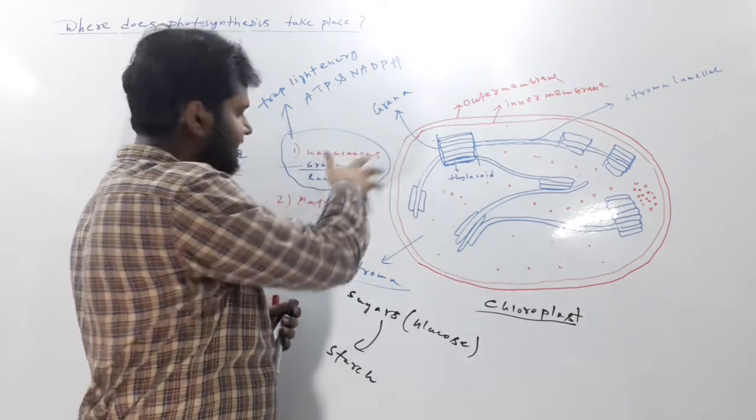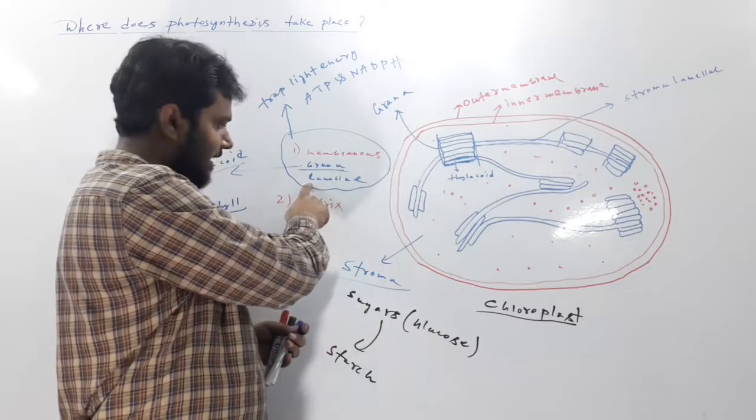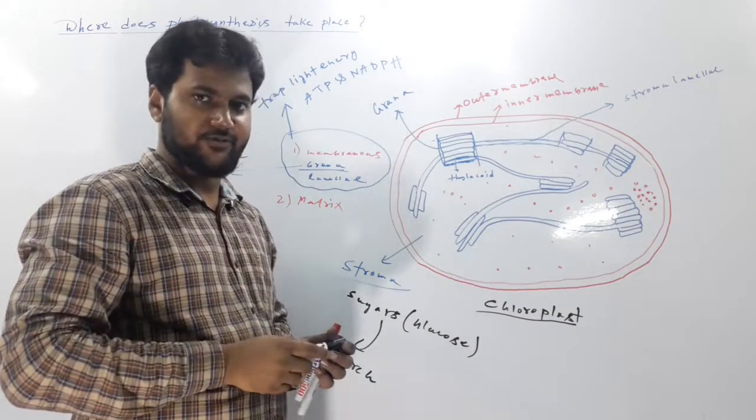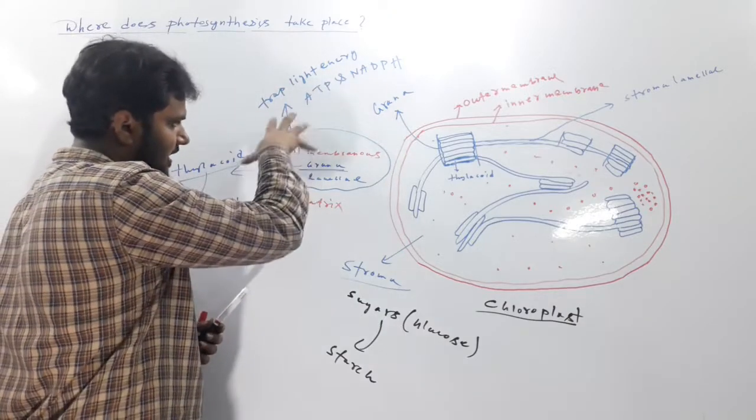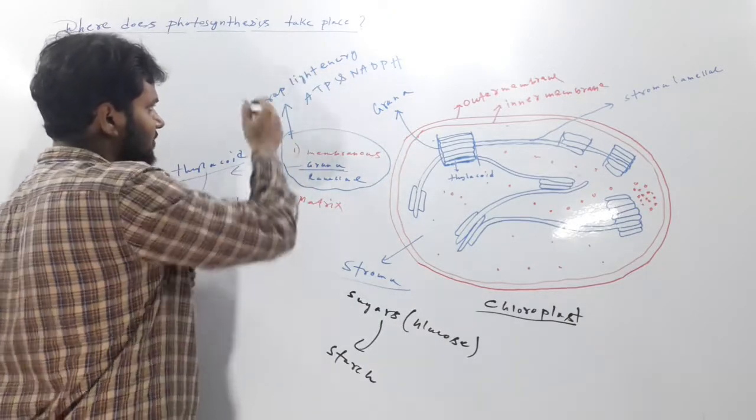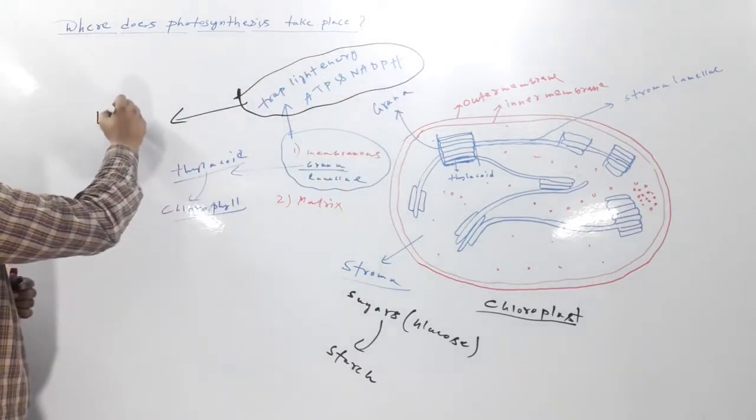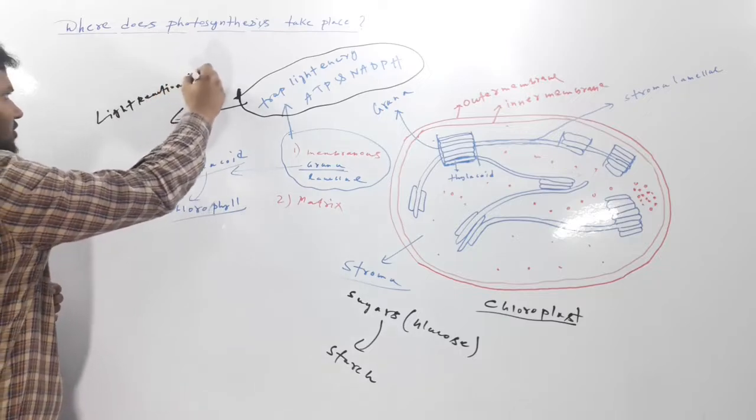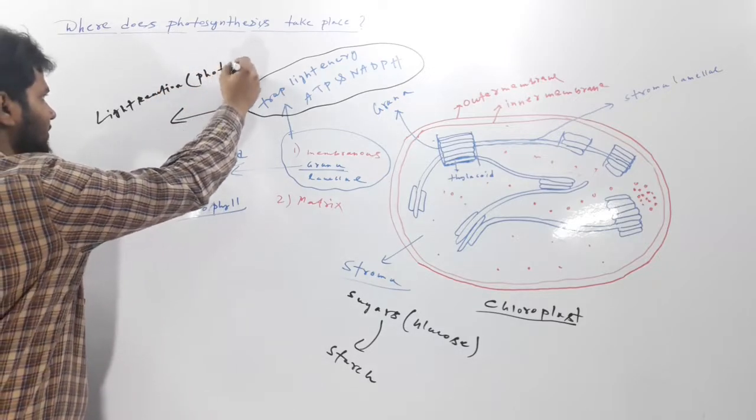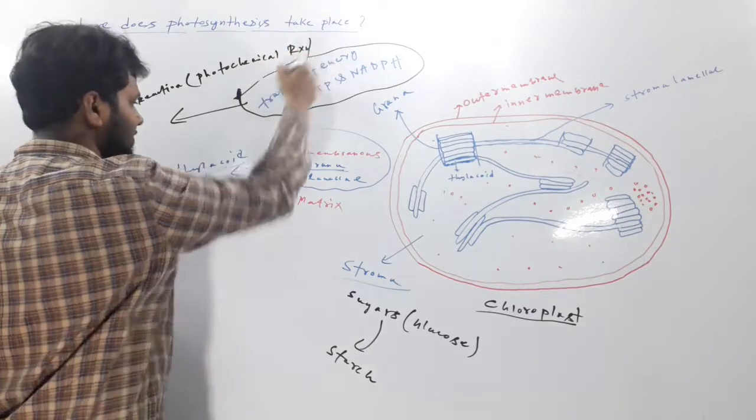This set of reactions which occur in this membranous part, in this grana lamelli, they are directly light-driven process. They are totally dependent on light. That's why this set of reactions are called light reactions, or it is also called photochemical reaction.